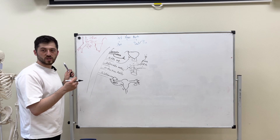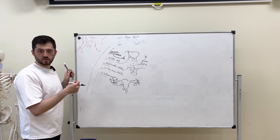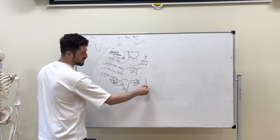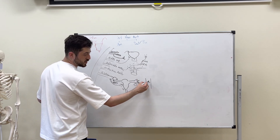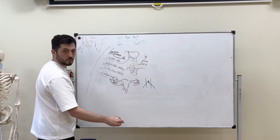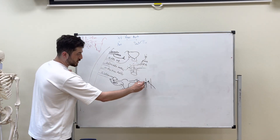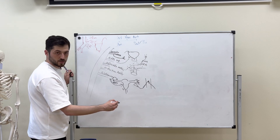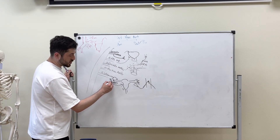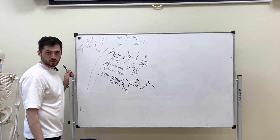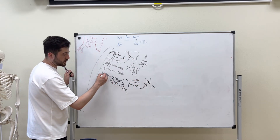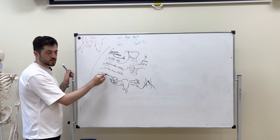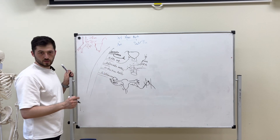The ovarian artery arises from the abdominal aorta — from our previous session we discussed the aorta has testicular or ovarian artery. The ovarian artery goes to the ovary, and the ramus ovaricus from the arteria uterina forms anastomosis with it. It's a branch from internal iliac artery via arteria uterina.